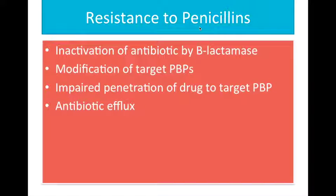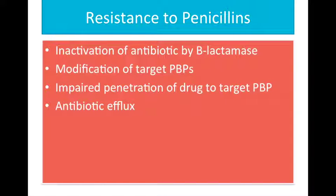Resistance to penicillins and other beta-lactams is due to one of four general mechanisms. First is the inactivation of antibiotic by beta-lactamase. Beta-lactamase production is the most common mechanism of resistance; hundreds of different beta-lactamases have been identified. Some, such as those produced by Staphylococcus aureus, Haemophilus influenzae, and Escherichia coli, are relatively narrow in substrate specificity, preferring penicillins to cephalosporins. Second is the modification of target PBPs. These resistant organisms produce PBPs that have low affinity for beta-lactam antibiotics and consequently are not inhibited except at relatively high, often clinically unachievable drug concentrations.